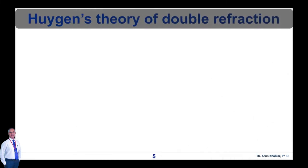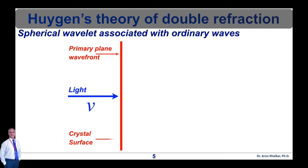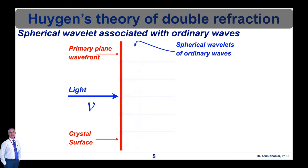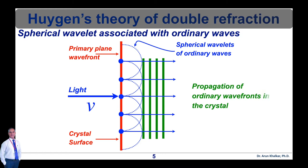Now let's see the spherical wavelet associated with ordinary waves. According to Huygens' theory of double refraction, a point in a doubly refracting or birefringent crystal produces two types of wave fronts. As shown in this figure, when ordinary light is incident on a crystal surface, the wave fronts corresponding to the ordinary ray are spherical. The ordinary waves travel with the same velocity in all directions, so the corresponding wave fronts are spherical. When light with velocity v is incident on the crystal surface, a primary plane wave front is generated, followed by spherical wavelets of ordinary waves, and propagation of ordinary wave fronts in the crystal is observed.